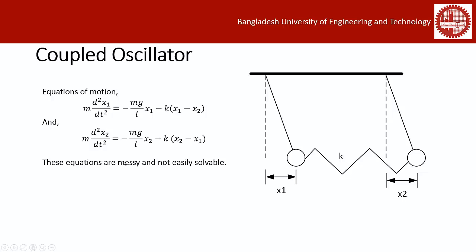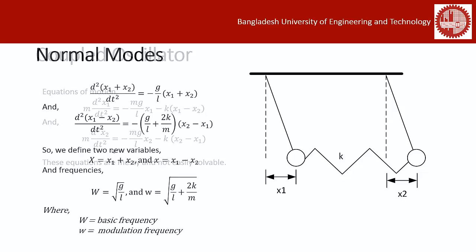Now let's look at the equations of motion of the system. The first equation is for the left pendulum, showing the force on the bob, the force due to the pendulum bob itself, and the force due to the spring. The second equation is for the right pendulum. These equations are coupled differential equations — each dependent on the variable of the other — so they are not easily solvable. We can solve them using normal modes, arrived at by dividing the equations by m, then adding and subtracting them.